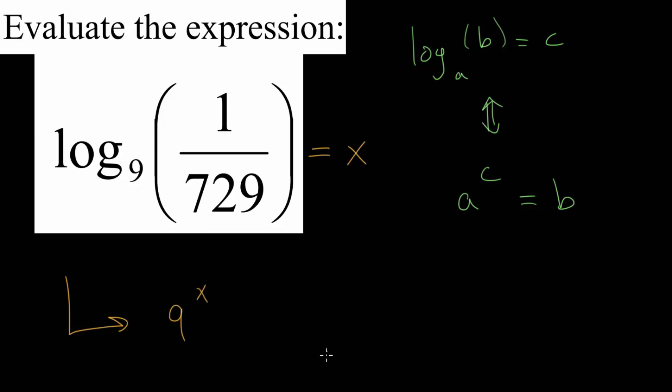So x, that's our missing exponent. And all of this is equal to the input of the logarithm, which is the fraction 1 over 729.